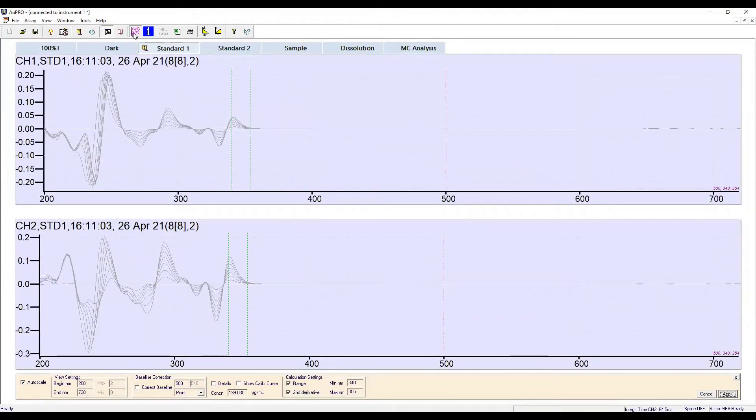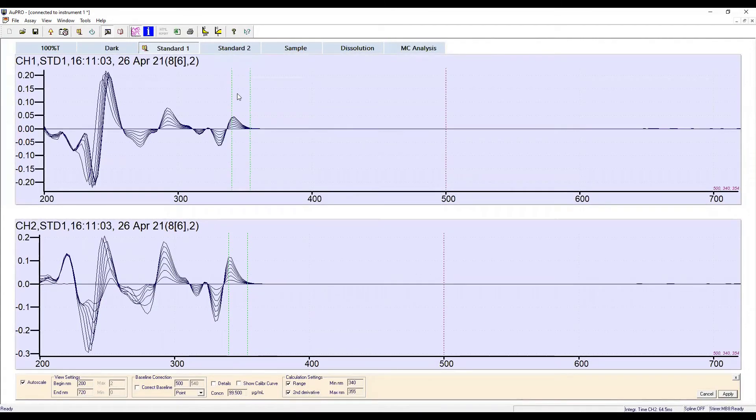Second derivative spectroscopy is used to combat any potential turbidity in the media, and appropriate wavelength range is selected.